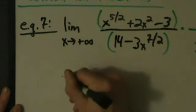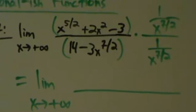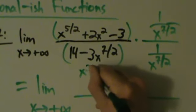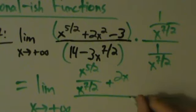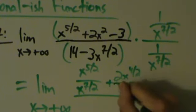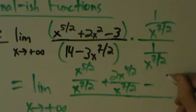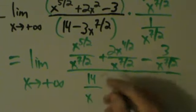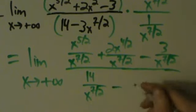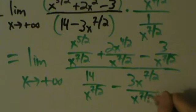So this equals the limit as x goes to positive infinity of: x to the 5 halves divided by x to the 7 halves, plus 2x to the 4 halves — I'll write it that way to make the next step easier — divided by x to the 7 halves, minus 3 over x to the 7 halves. On the bottom: 14 over x to the 7 halves, minus 3x to the 7 halves divided by x to the 7 halves.